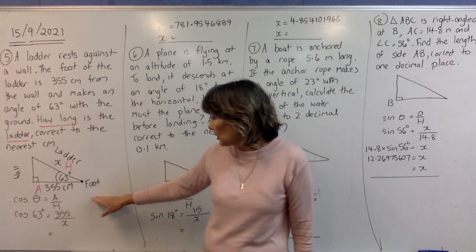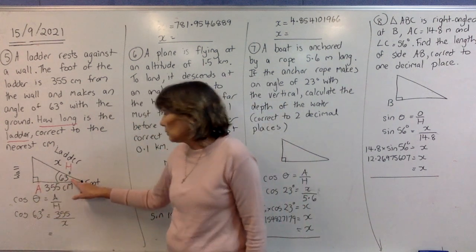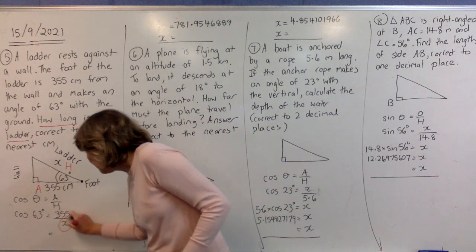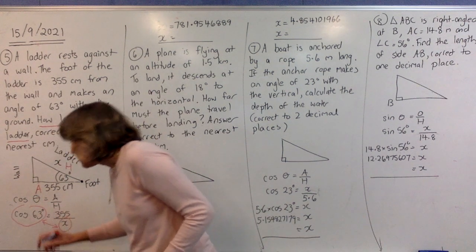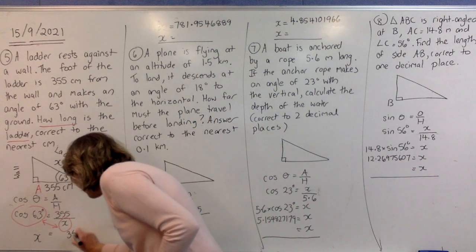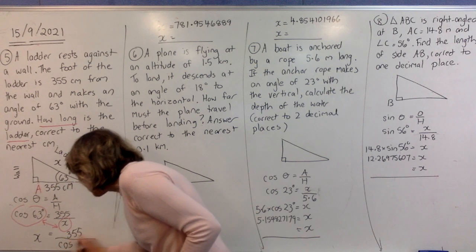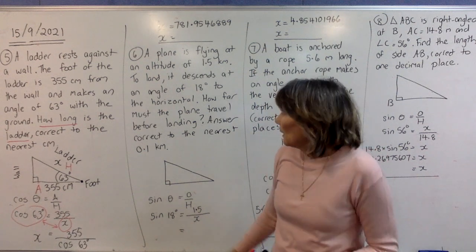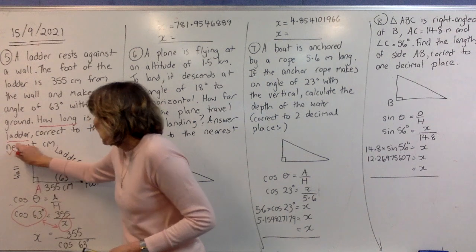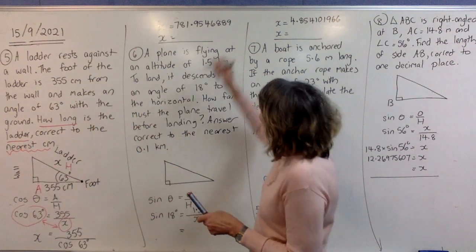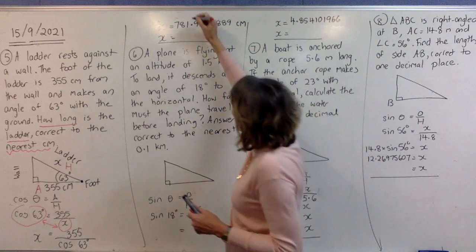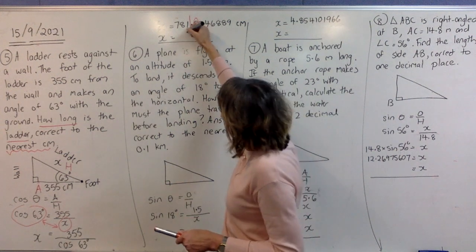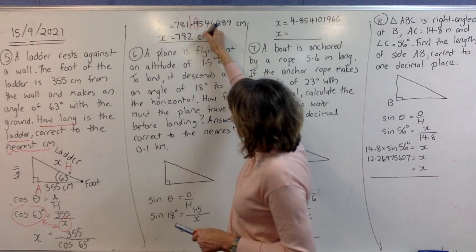Write your formula first: cos θ = A/H. Put in the numbers: cos 63° = 355/x. With the letter on the bottom, we swap positions — x moves to the top and cos 63° goes to the bottom, so x = 355 ÷ cos 63°. Put that into your calculator using the fraction key. The answer is in centimeters; rounding to the nearest centimeter, the next digit is five or more so it rounds up by one.